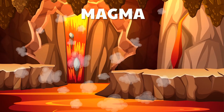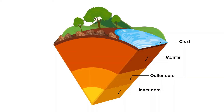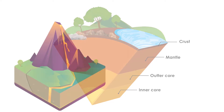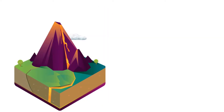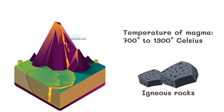Magma is a semi-liquid rock of crystallized minerals, dissolved gases, and extremely hot liquid formed and found beneath the surface of the earth. Much of the earth's mantle is made largely of magma. This magma can push through holes or cracks in the crust causing volcanic eruptions. When magma is ejected out of the volcano it is called lava, and when it cools and solidifies it is known as igneous rocks. The temperature of magma ranges from 700 to 1300 degrees Celsius.